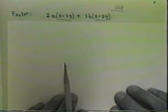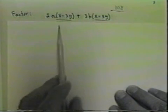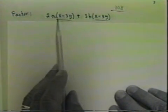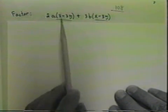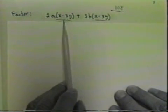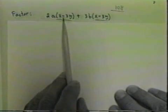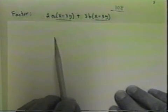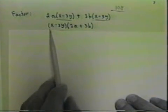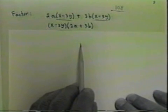I can pretend that x minus 3y is a single expression, a single factor, so I can apply the distributive property. I'm going to factor an x minus 3y from both of them. In other words, I'm going to divide both of them by x minus 3y. Now I'm going to get x minus 3y times 2a plus 3b.